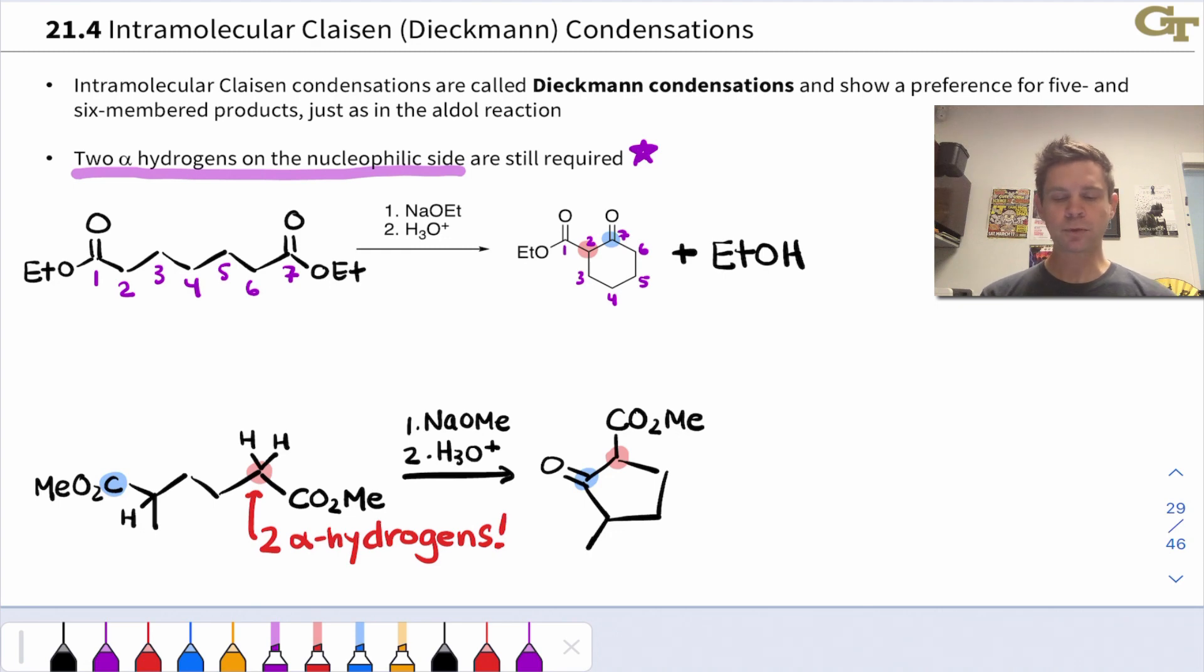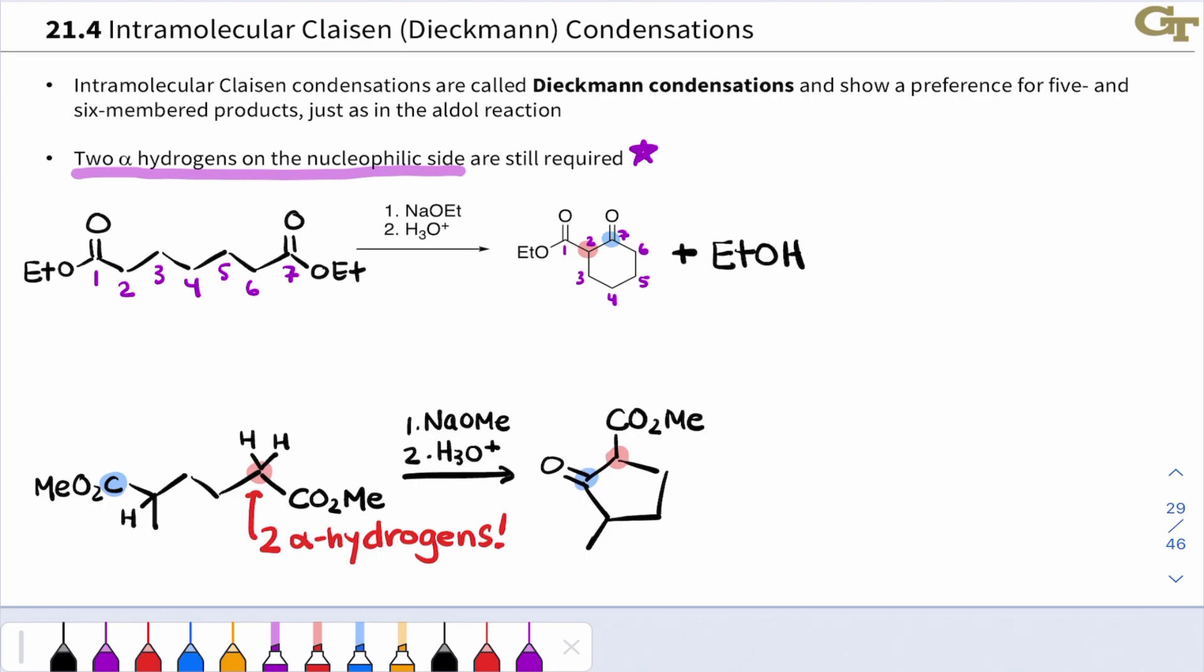This side will act as the nucleophile because of its two alpha hydrogens there. And the product we get will look like this. Notice here that there is a hydrogen at this carbon highlighted in red. Formation of the stabilized enolate in this first step is critical. An acidic workup is used to protonate there to ultimately give the neutral product. So keep in mind the Dieckmann condensation as a method for the synthesis of five and six-membered cyclic beta-keto esters.